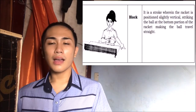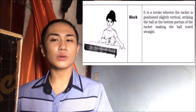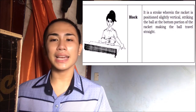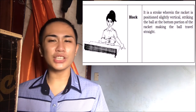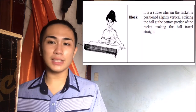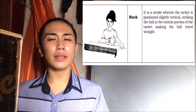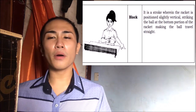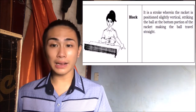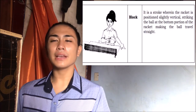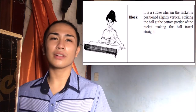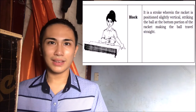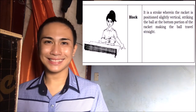The last hit is the block. It is a stroke where the racket is positioned slightly vertical, striking the ball at the bottom portion of the racket, making the ball travel straight.